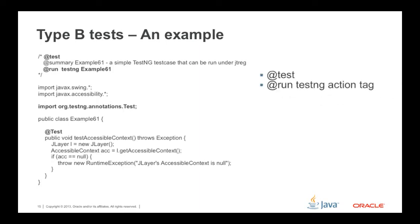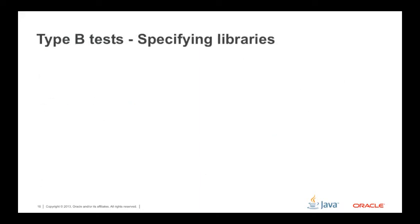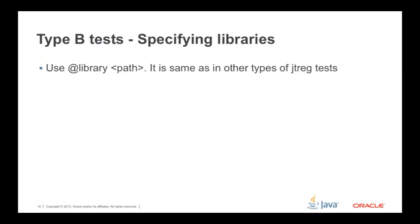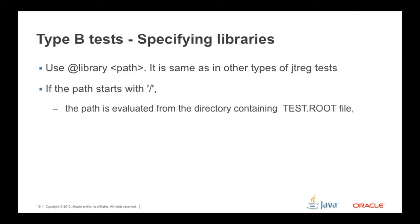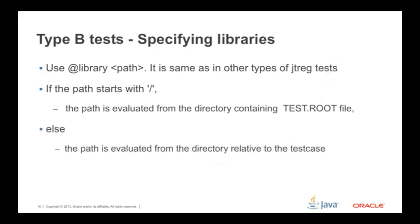In the Type B test case example, observe the @test and @run TestNG action tags, and notice that the test case does not have a main method. To specify libraries in Type B tests, use the @library tag in the test source file, the same as any other JTREG tests. If the path starts with a slash, it is evaluated from the directory containing Test.root; otherwise, it is evaluated relative to the test case.